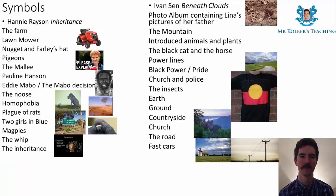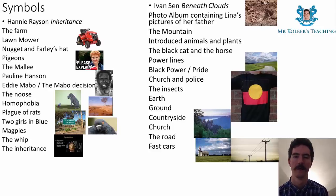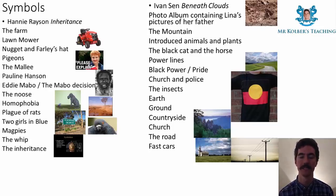The symbols for Inheritance include the farm, the lawnmower, Nugget and Farley's hat, pigeons, the mallee, Pauline Hanson, Eddie Mabo and the Mabo decision, the noose, homophobia, a plague of rats, two girls in blue, magpies, the whip, and of course inheritance itself. In Beneath Clouds, symbols include the photo album with Lena's pictures of her father, the mountain, introduced animals and plants such as the corn, the black cat, the horse representing innocence, power lines and black pride, churches, the police, insects crawling over dead animals, the earth, the countryside, the road, and fast cars.